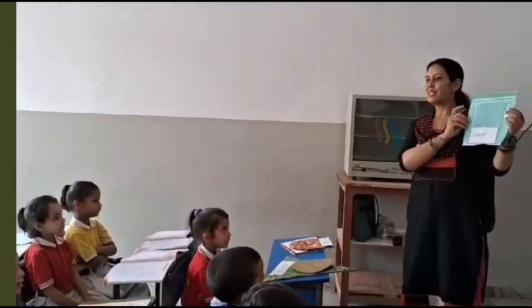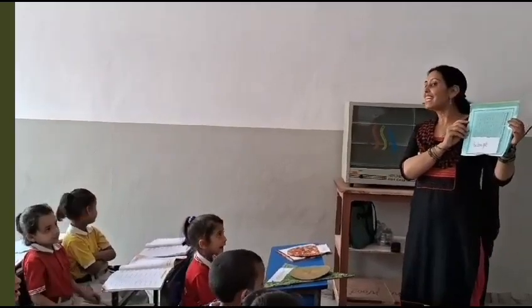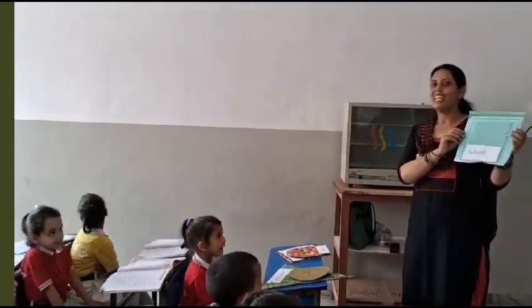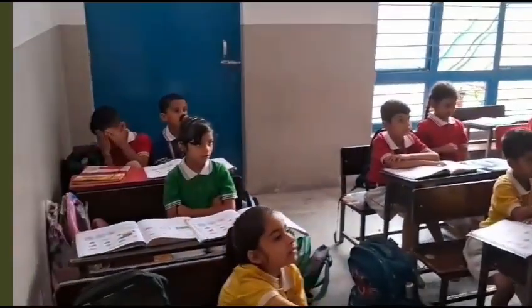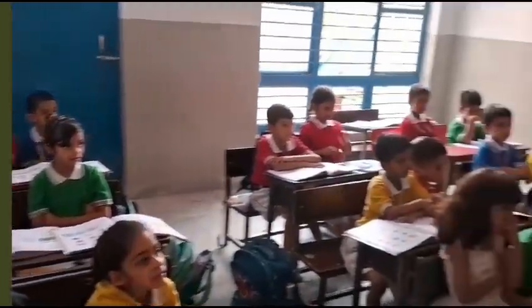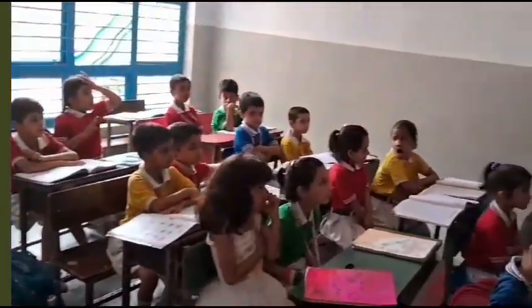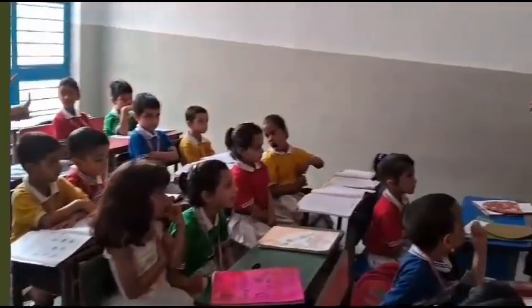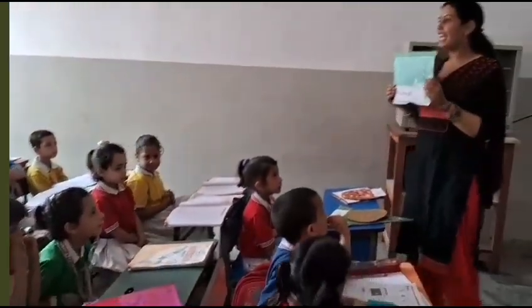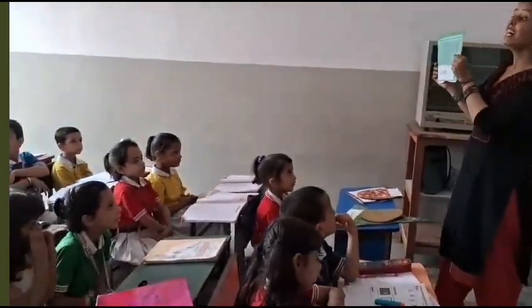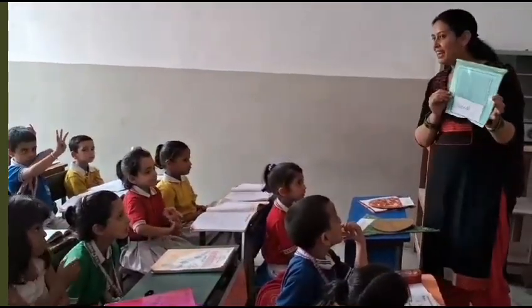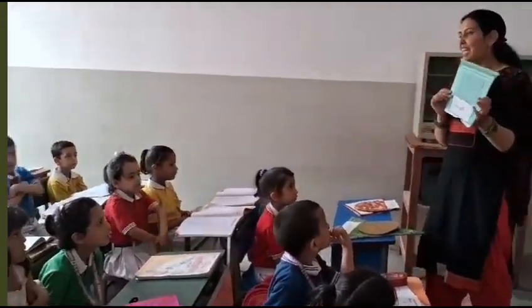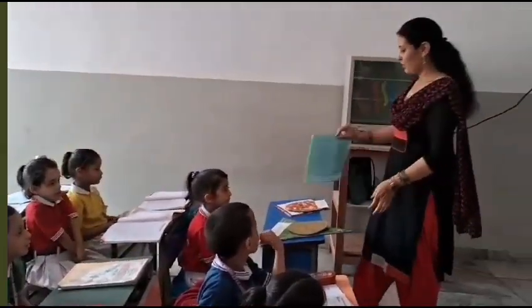Rectangle. Which shape is it? Rectangle. Rectangle. How many corners in the rectangle? How many corners? Four. Four. Very good. Four.